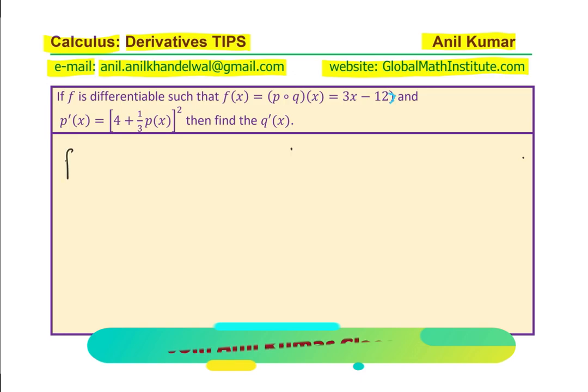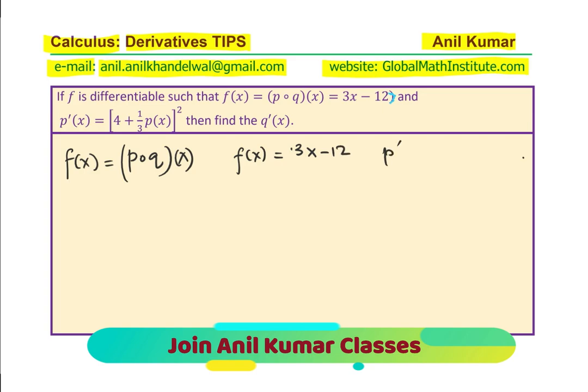Now, let us try to analyze the question. We are given that the function f(x) = p(q(x)), that is a composite function. And we are also given that this function f(x) is equal to 3x - 12.